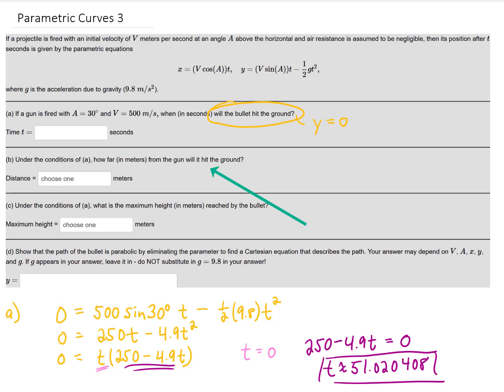And alright for the next part of this problem the question is under these conditions how far from the gun will the bullet hit the ground? So what we have to realize is that our bullet starts here it goes up and it comes back down and then it hits the ground over here 51.020408 seconds later. So this distance here is what we're looking for. This distance here can be given by the x value at time equals 51.02 and so on seconds.